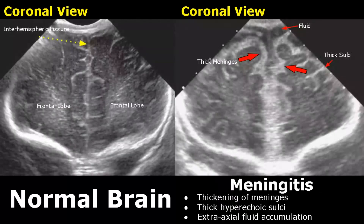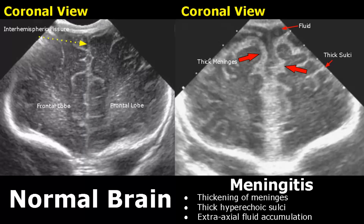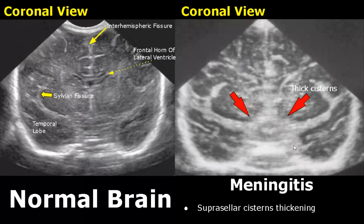This image shows the normal frontal lobe of the brain. In meningitis, the meninges are thickened and hyperechoic. Even the sulci are thick and hyperechoic. Some fluid accumulation is also seen — this is called extra-axial fluid. Thick supracallosal cisterns will also be found — you can see the difference in thickness of the cisterns.